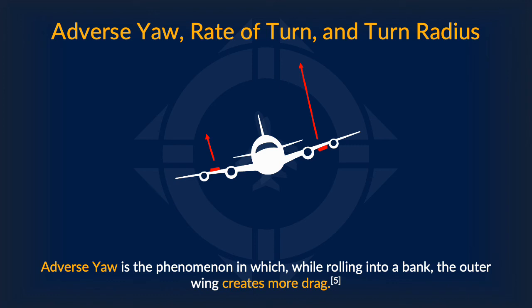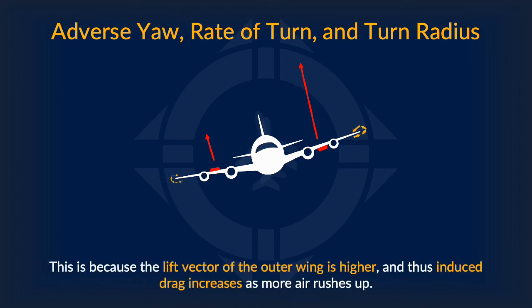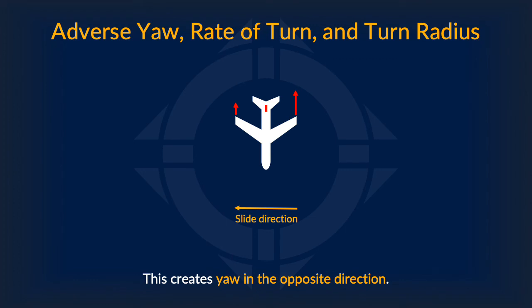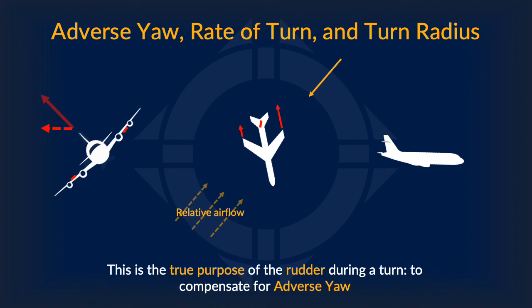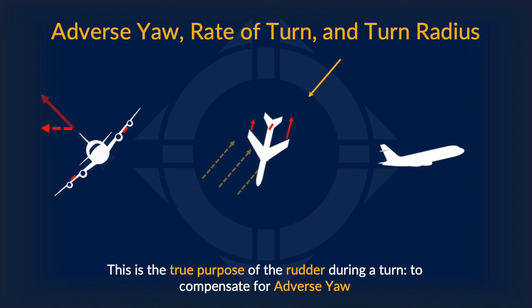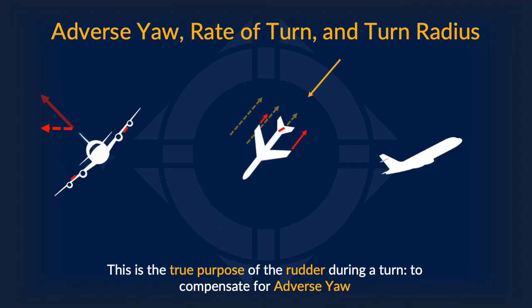Now, what is the rudder actually used for? The answer is adverse yaw — a scenario in which, while rolling into a bank, the outer wing generates more drag. This is because the lift vector of the outer wing is higher, and thus induced drag increases as more air rushes up. This creates yaw in the undesired direction — we're trying to turn to the left, but the airplane yaws to the right. The true purpose of the rudder during a turn is to compensate for adverse yaw. By turning the rudder towards your desired turn direction, you yaw towards your turn, compensating for adverse yaw.